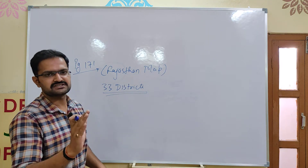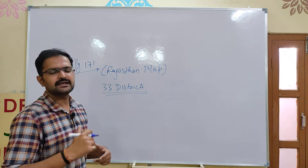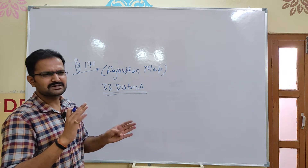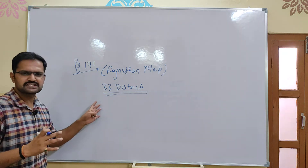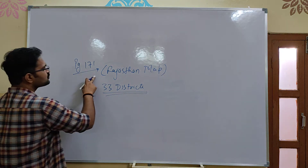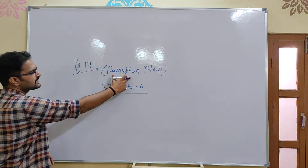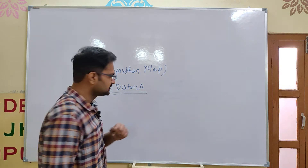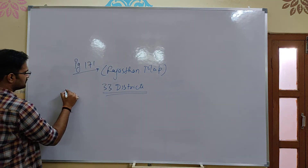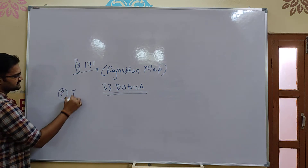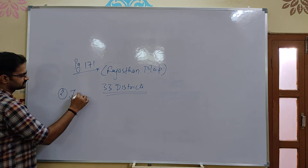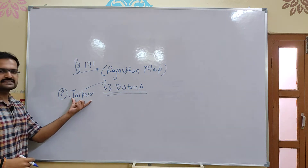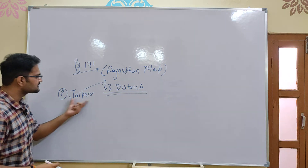You should know which district is which. Because it covers minerals, population, and literacy — questions from these chapters can be asked, and also water resources. So the first thing to note: the map has 33 districts. This is the first point. The second point: Jaipur — this is important, the importance of Jaipur.